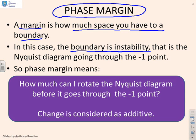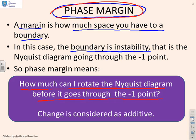Because it's phase, in particular what we're saying is: how much can I rotate the Nyquist diagram before it goes to the minus 1 point? And in essence, that's telling you the phase change you're allowed before you go unstable — that's why it's called phase margin. The changes we're going to consider here are additive, so we're saying how much can I add to or subtract from the phase, or in other words, how much do I rotate the diagram?